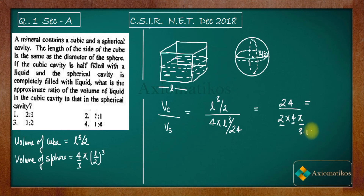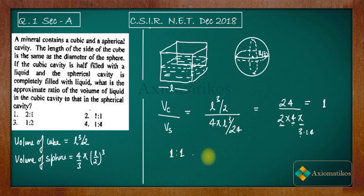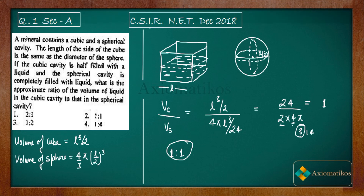We know π is approximately 3.14. Since we need to find the approximate ratio and the answer options don't include decimal ratios, we approximate π as 3. This gives us 3/3 = 1, so the ratio is approximately 1:1. Therefore, option number 2 is correct.